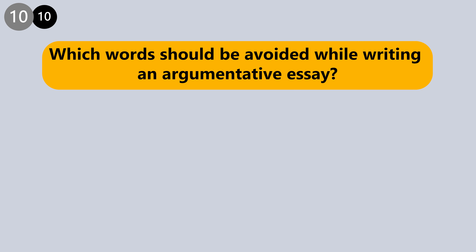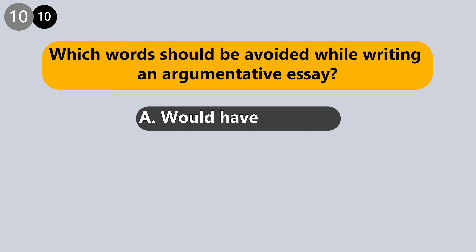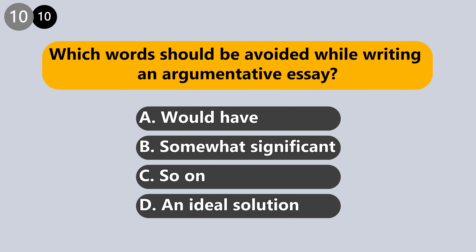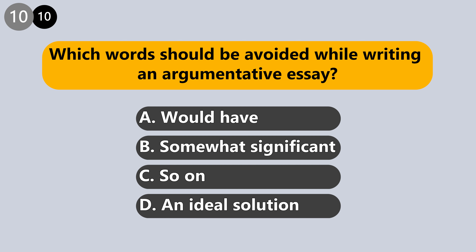Which words should be avoided while writing an argumentative essay? Would have, somewhat significant, so on, or an ideal solution? The answer is: so on. These run-on expressions demonstrate nothing but your inability to work with arguments, details, and examples. Please avoid them in your essays.